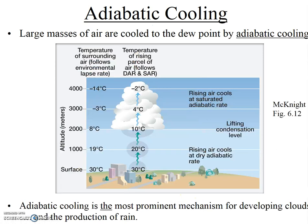As stated earlier, this cooling that occurs as air rises is the most prominent mechanism for developing clouds and producing rain. As large air masses rise, they expand and are cooled, and eventually they may be cooled to the dew point temperature, at which point condensation begins and clouds form.